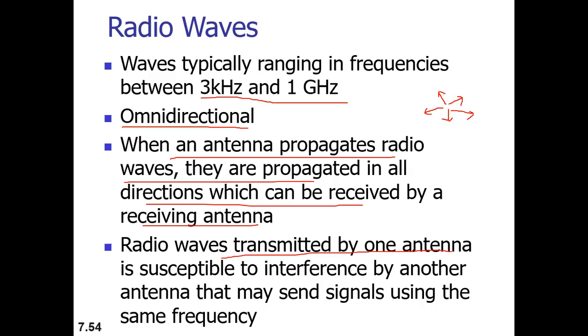However, when you're transmitting signals everywhere, the signals transmitted by one antenna can serve as an interference by another antenna that is sending the signals using the same frequency. That is one of the disadvantages of the omnidirectional property.